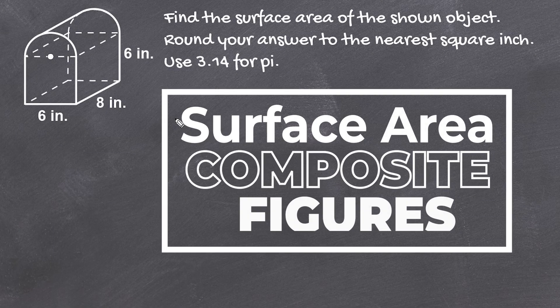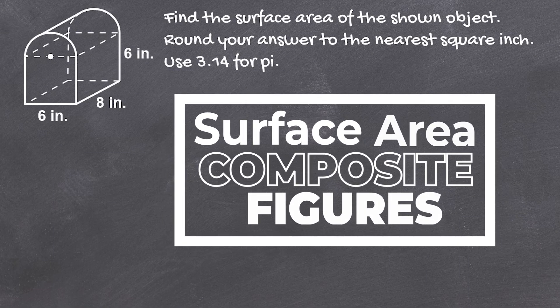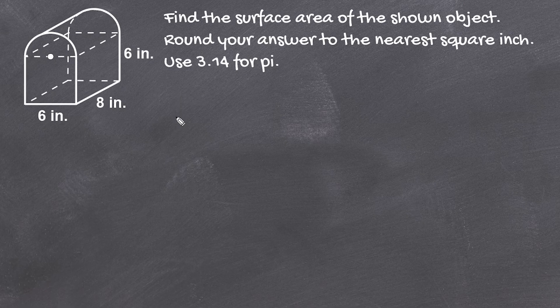Hey, this is Mr. Masonette. What we're going to do in this tutorial is calculate the surface area of a composite figure which is comprised of a rectangular prism and half of a cylinder.